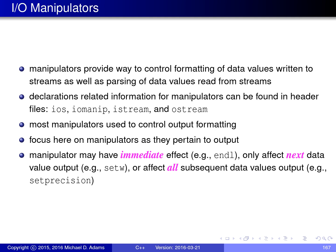When using IO streams, sometimes we may want additional control over how input and output are performed. IO manipulators are a mechanism for allowing us to get this additional control. With IO manipulators we can control formatting of data values written to output streams and also control parsing of data values read from input streams. The relevant declarations can be found in the header files ios, iomanip, istream, and ostream. Most manipulators are used to control output formatting.